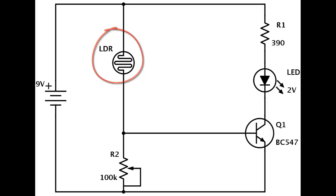We call it an LDR. When it's dark, the LDR has high resistance. This makes the voltage at the base of the transistor too low to turn the transistor on. Therefore,